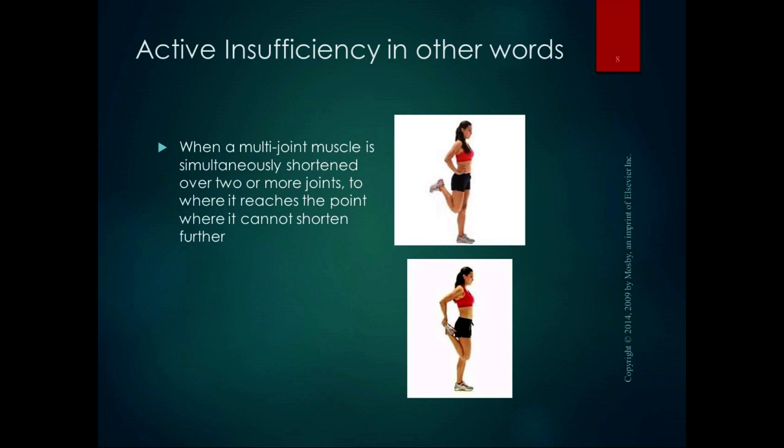The top picture illustrates active insufficiency of the hamstrings — the girl is doing a hamstring curl, and because the hamstrings do hip extension and knee flexion, when she's in that extended hip and flexed knee position, she reaches the point where the muscle can't go any further. Even though she can passively bring her knee further, actively she cannot because that multijoint muscle is simultaneously shortened over both joints. The top picture illustrates active insufficiency of the hamstrings.